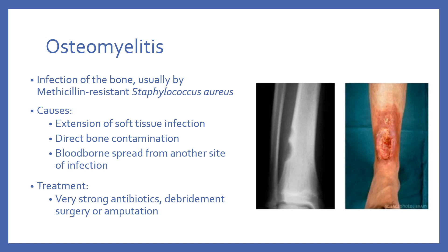The treatment of osteomyelitis is geared towards stopping the infection, so very strong antibiotics are always given. Many times, surgery is needed to debride the necrotic infected bone, and in some cases the infection has destroyed so much bone and the person is so sick that amputation is the best treatment, assuming the infection is in a bone that can be amputated. The picture shows what the infection looks like on x-ray — a small area of bone that has been eaten away — and also shows what the infection looks like on the outside skin.